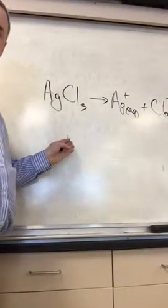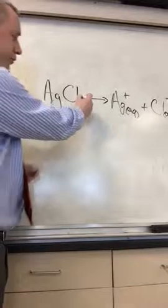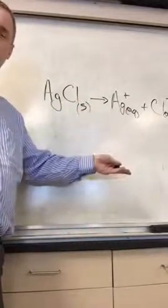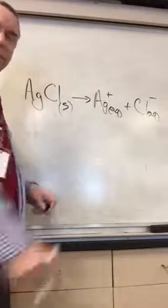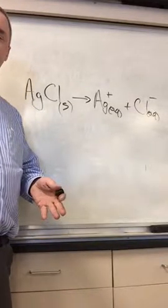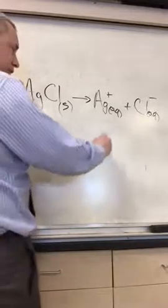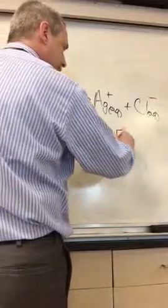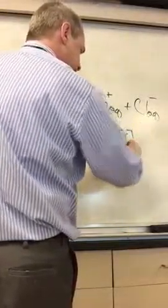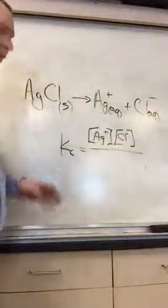The AgCl is dissociating into Ag plus and Cl minus. Now, I want to get this on here. If we do a KC of this, you would do KC equals the product's concentrations over the reactant concentration. But wait.